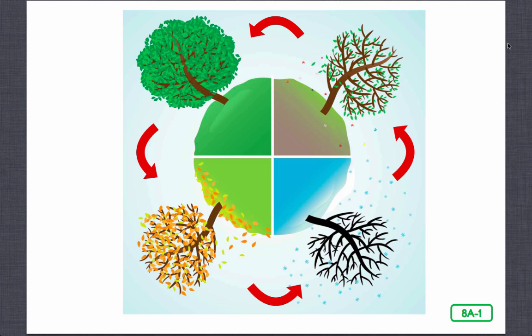This is lesson eight: the life cycle of a butterfly. A cycle is a sequence of events that repeats itself again and again. A life cycle includes all the stages a living thing goes through from birth to adult. The seasonal cycle affects the life cycles of living things.